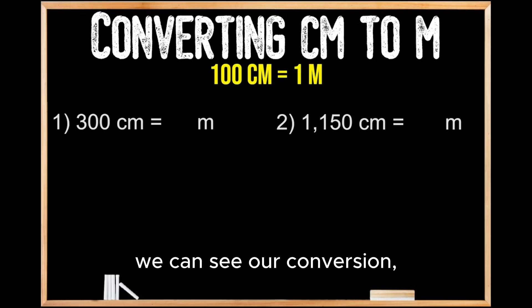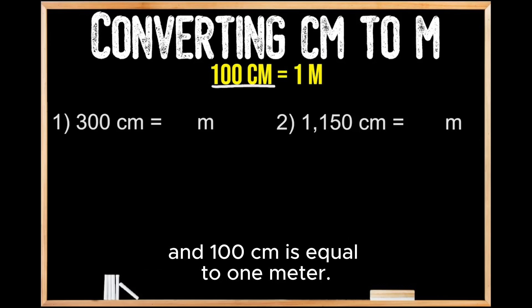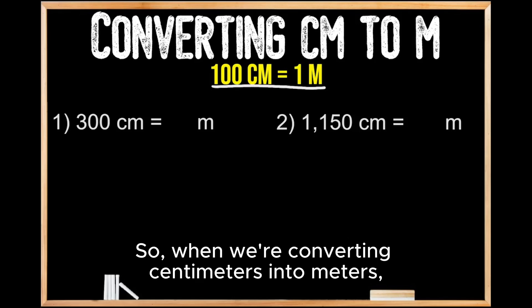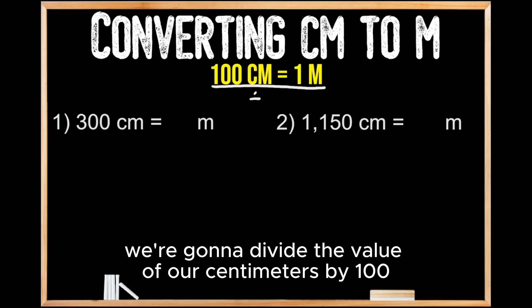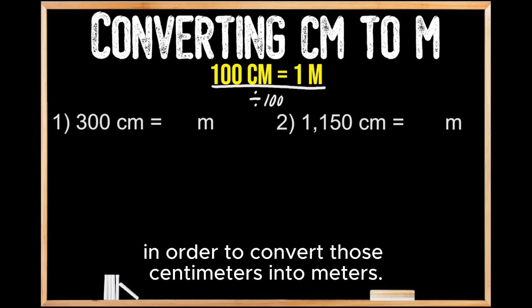Looking up top here, we can see our conversion: 100 centimeters is equal to 1 meter. So when we're converting centimeters into meters, we're going to divide the value of our centimeters by 100 in order to convert those centimeters into meters.